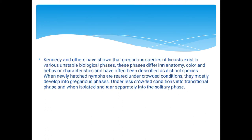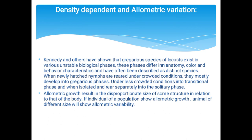Density-dependent variation: gregarious species of locusts exist in various unstable biological phases differing in anatomy, color, and behavioral characteristics, often described as distinct species. When newly hatched nymphs are reared under crowded conditions, they mostly develop into gregarious phases; under less crowded conditions into a transitional phase; and when isolated and reared separately, into the solitary phase. Allometric growth results in the disproportionate size of substructures in relation to the body, causing allometric variability.